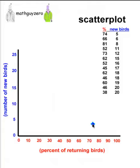Let's go to the next point, 66% and 6. Okay, 66%, and then we go up to 6 birds, a little bit higher than that one.